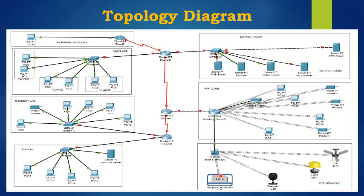Let me show the topology diagram we are going to use in this project. This topology is designed based on an academic institution scenario. An academic institution will have a student lab — this is the student lab with some computers. There is a separate IPv6 lab with a DHCPv6 server. Then there is the VLAN lab, which has three different VLANs: VLAN 10, VLAN 20, and VLAN 30.